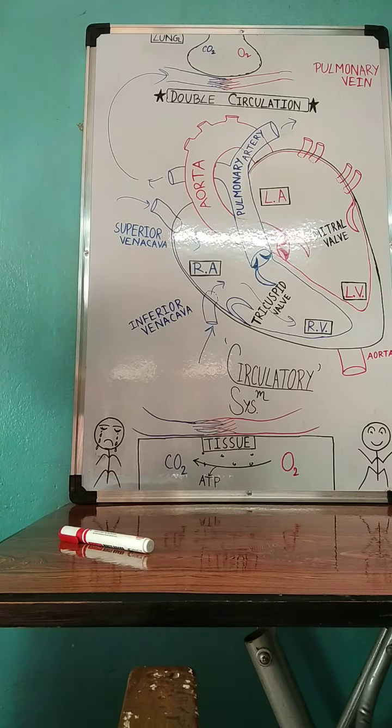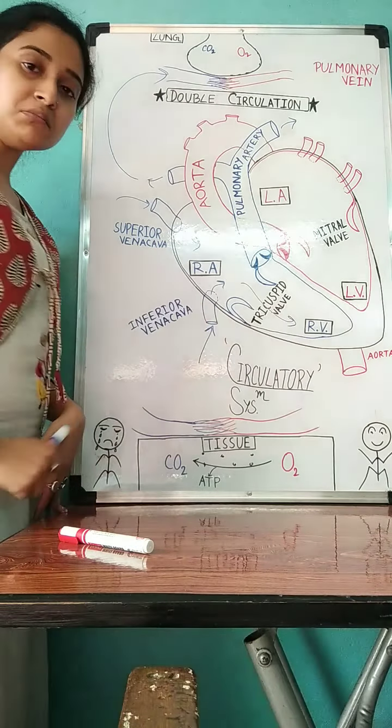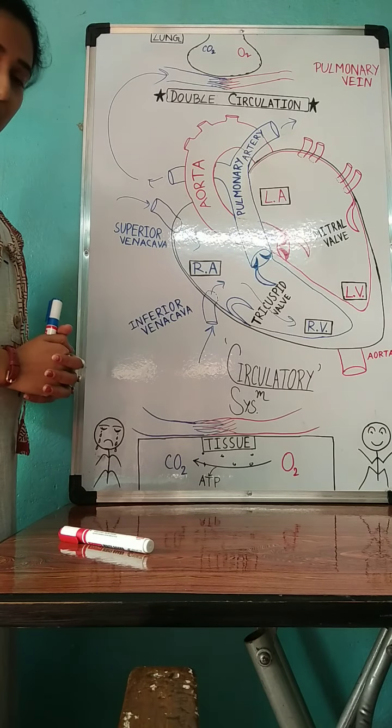Now see the interior part of heart. The two sides of heart are divided by a septum to avoid the mixing of deoxygenated and oxygenated blood.